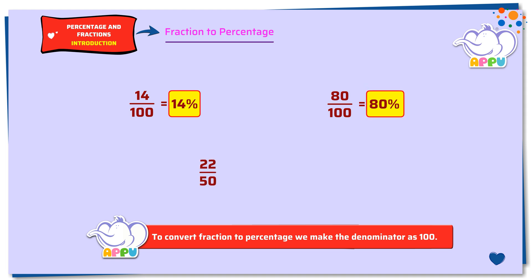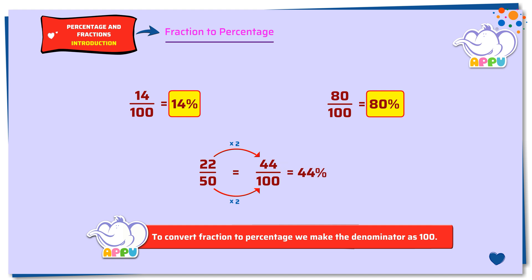22 by 50. We see that the denominator of this fraction is not 100. Let's multiply the numerator and the denominator of the fraction by 2. 50 times 2 equals 100, and 22 times 2 equals 44. We get 44 by 100, which is 44%. So 22 by 50 equals 44%.